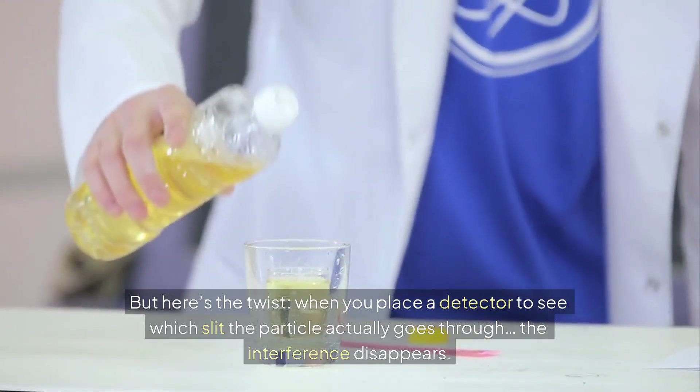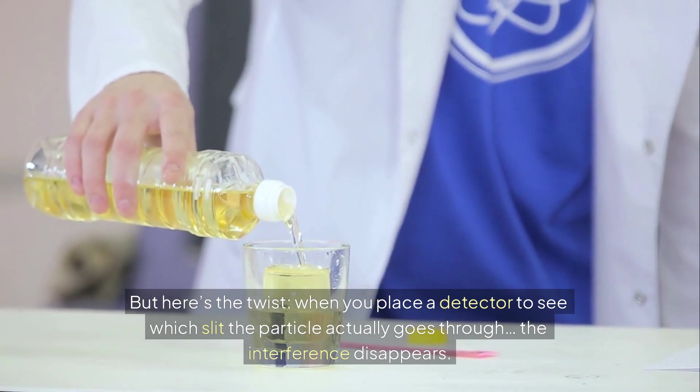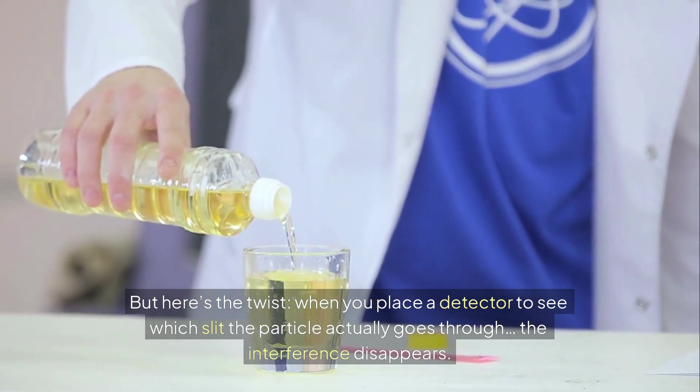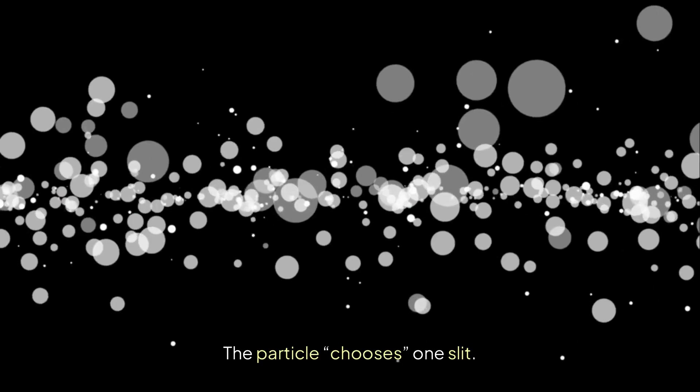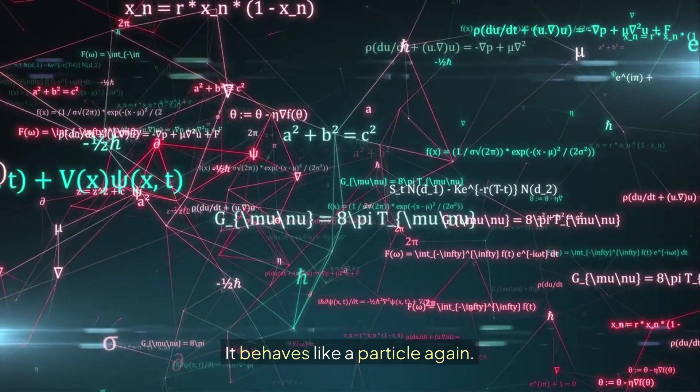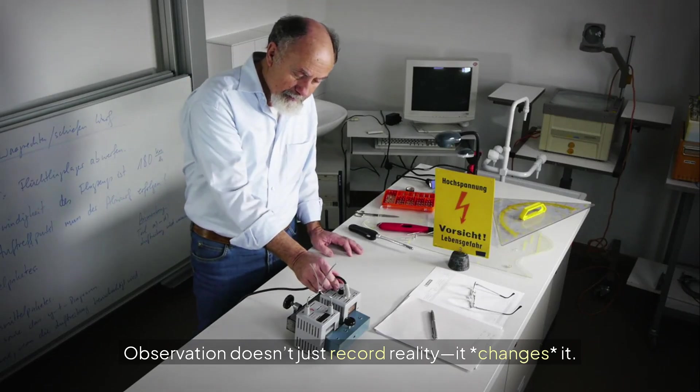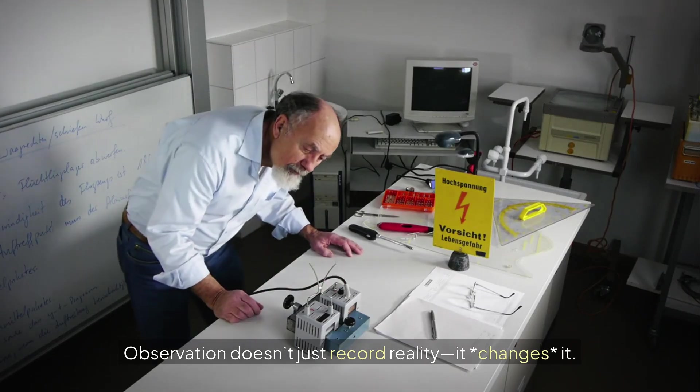But here's the twist. When you place a detector to see which slit the particle actually goes through, the interference disappears. The particle chooses one slit. It behaves like a particle again. The act of measuring collapses the wave function. Observation doesn't just record reality, it changes it.